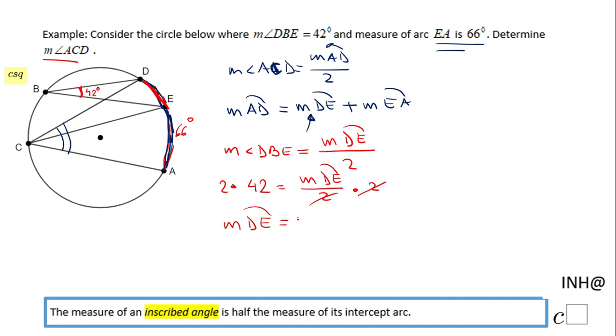So now we can go back right here and we can find the measure of arc AD, which is the sum of the measure of arc DE, which is 84, and arc EA, which is 66.